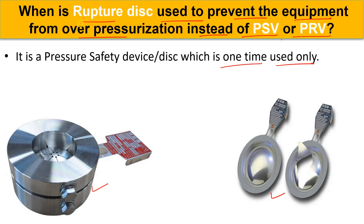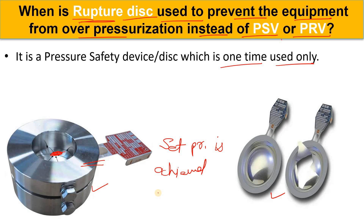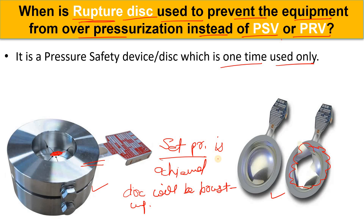As the name suggests, 'rupture disk' — rupture means it will burst, and there is a disk. You can see there is a holder and there is the disk. When the set pressure is achieved, this disk will burst. Here you can see in the picture — that is how the rupture disk works.